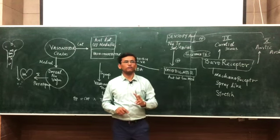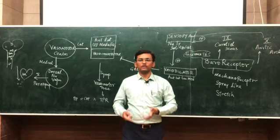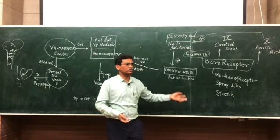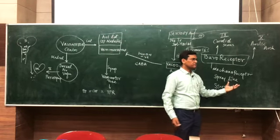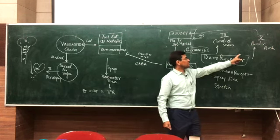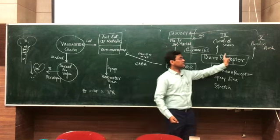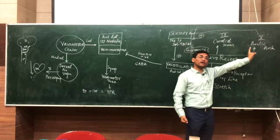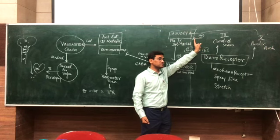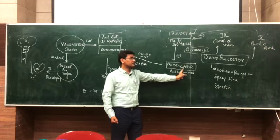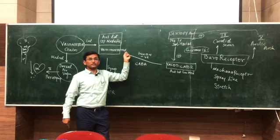This baroreceptor mechanism is especially important because your postural regulation experiment works through this system. The blood pressure changes when you sit, lie down, or stand are all controlled by this second-to-second blood pressure control. The carotid sinus and aortic arch are consistently receiving blood volume and pressure, so they are continuously firing, sending continuous signals to the nucleus tractus solitarius, which continuously excites the vasodilator area, which continuously inhibits the vasoconstrictor area.